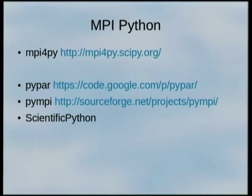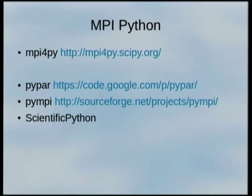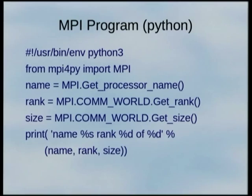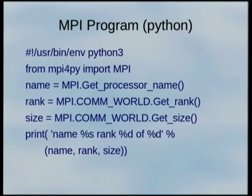MPI for Python — mpi4py is the one I've used, actually the only one. Most of my work is in C, and Python is my second language. A very simple MPI program in Python just gets the name, rank, and size. Name is what the machine is called. Rank is MPI's terminology for which number am I — of those 86,000, which number am I? The program sometimes needs to decide what to do based on its number. Size is how many total instances are running.